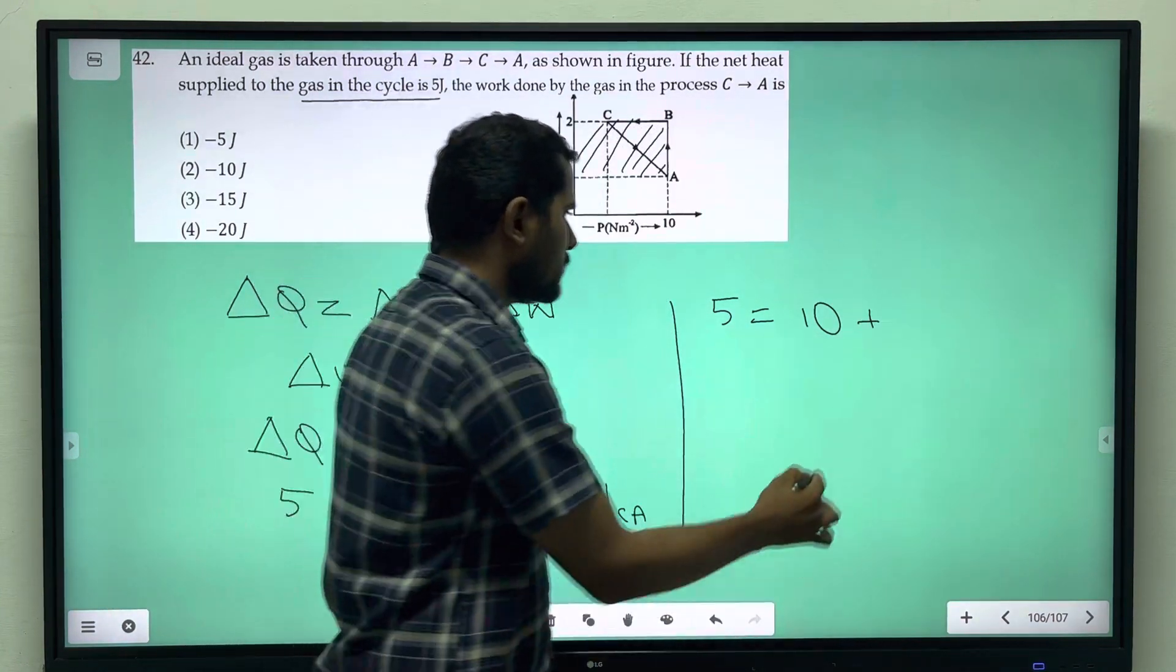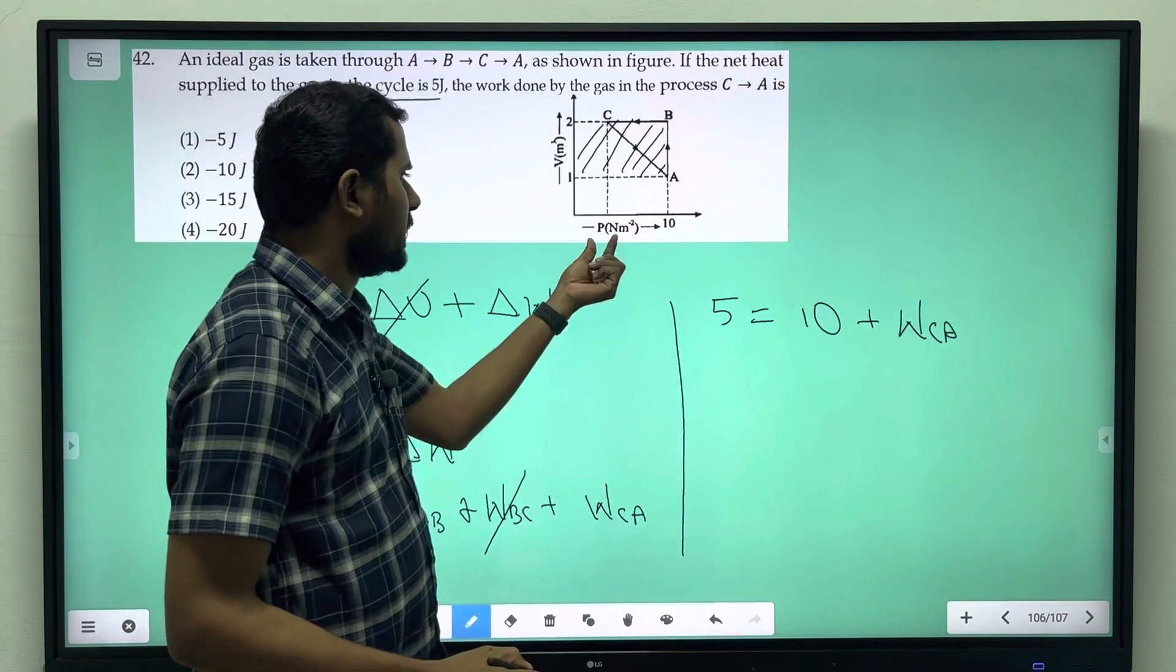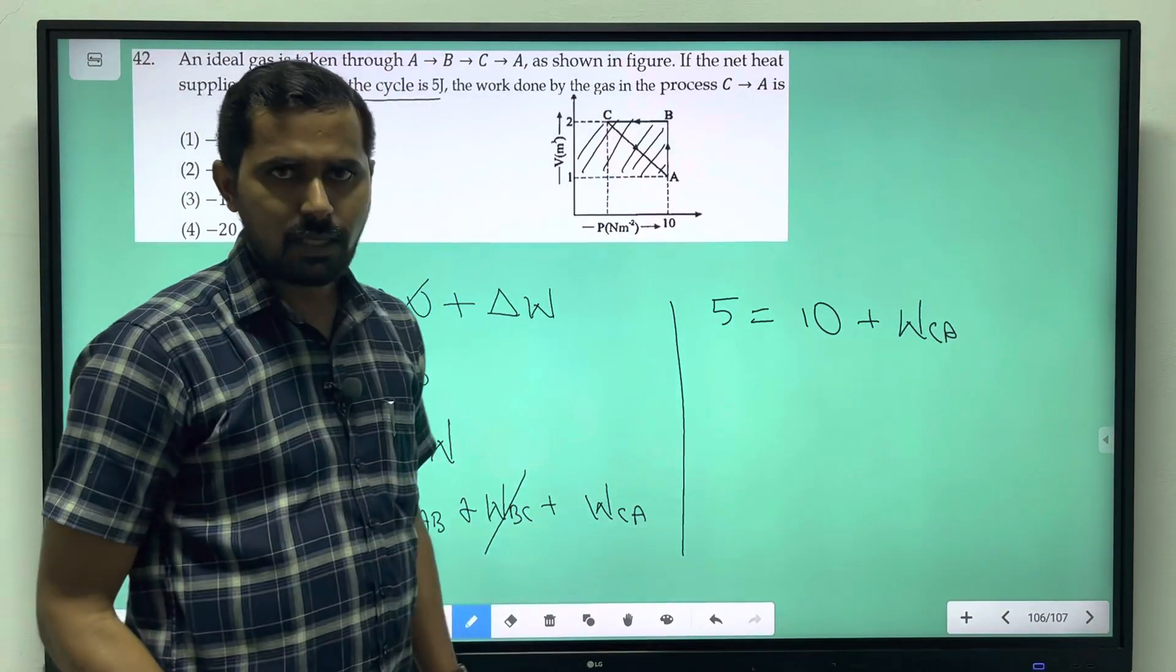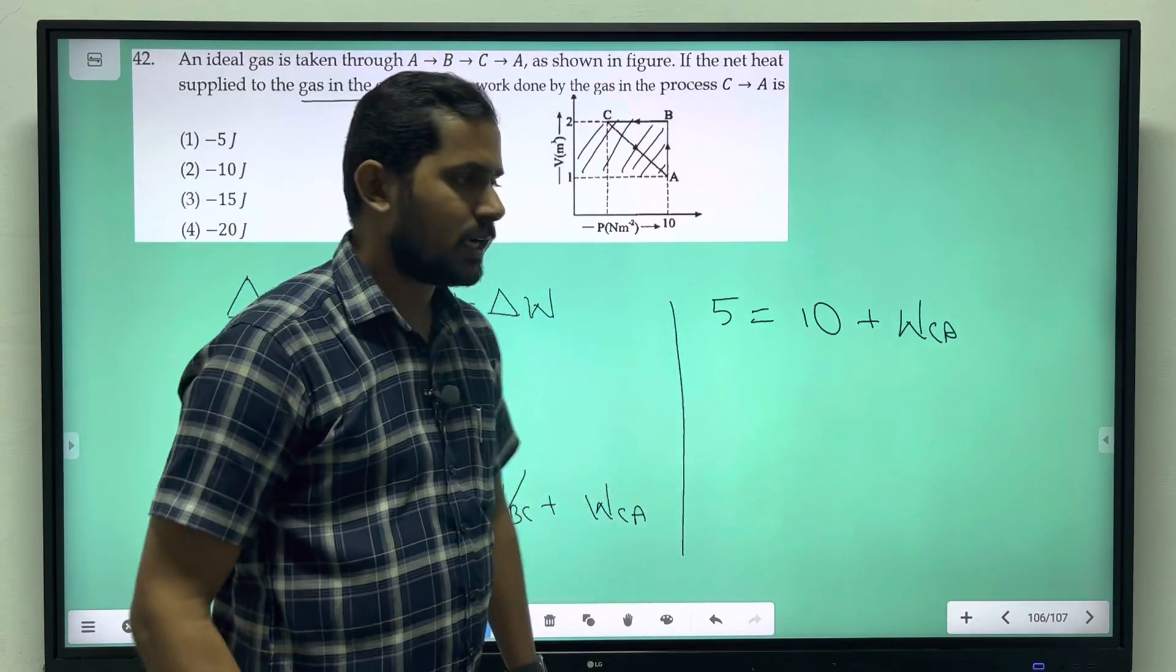Plus W_CA. Using SI units of Newton per meter square and volume meter cube, we can use 10 directly.